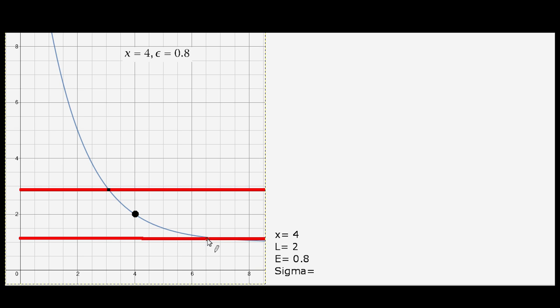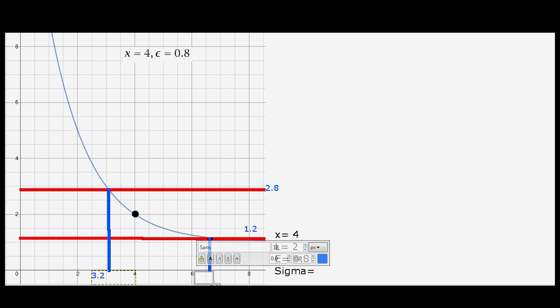Now we can find delta by plotting a line straight down where the two y bounds intersect the function. These lines are drawn in blue. Now we can graphically estimate what the x values of those lines are where they touch the x axis. The lower bound appears to be around 3.2, while the upper looks to be around 6.6.